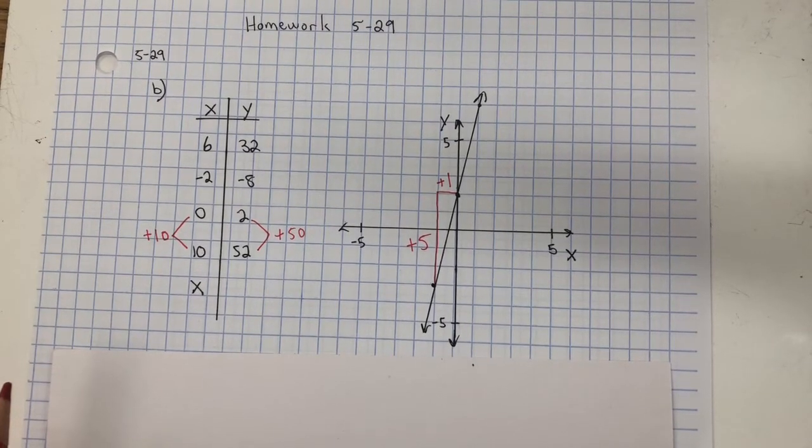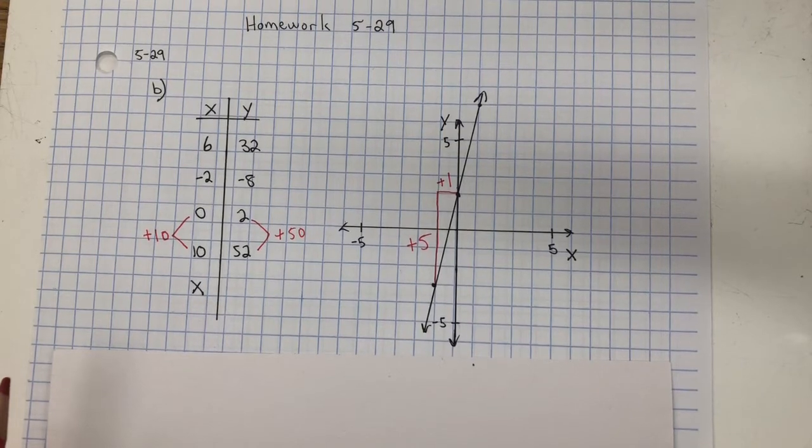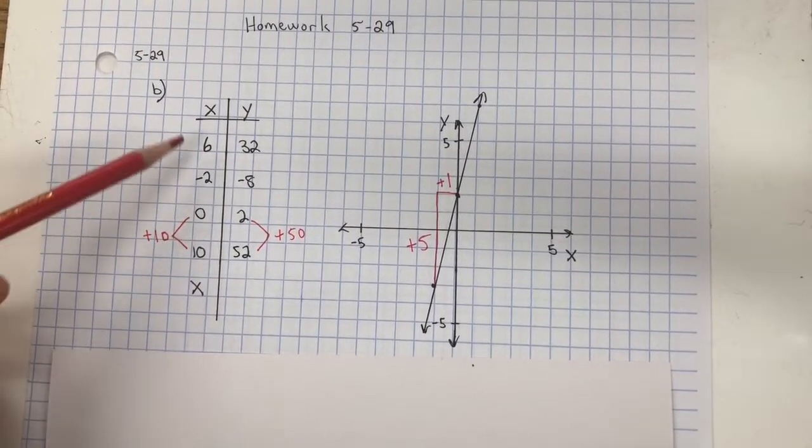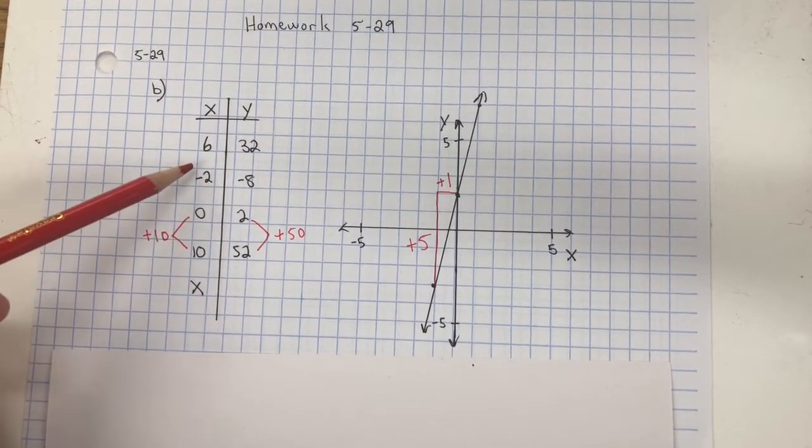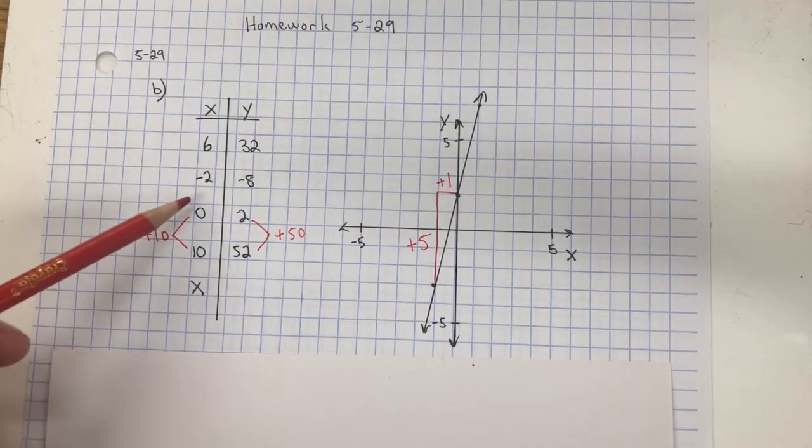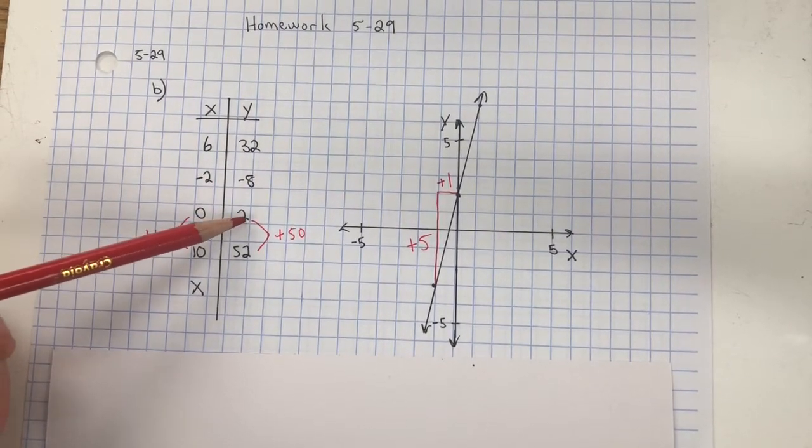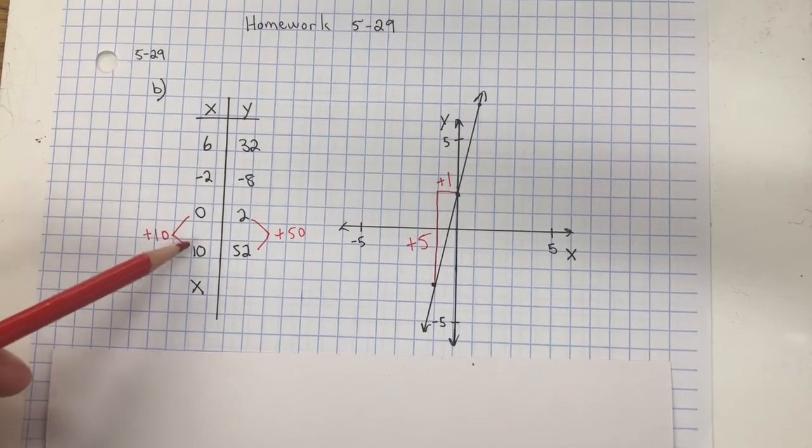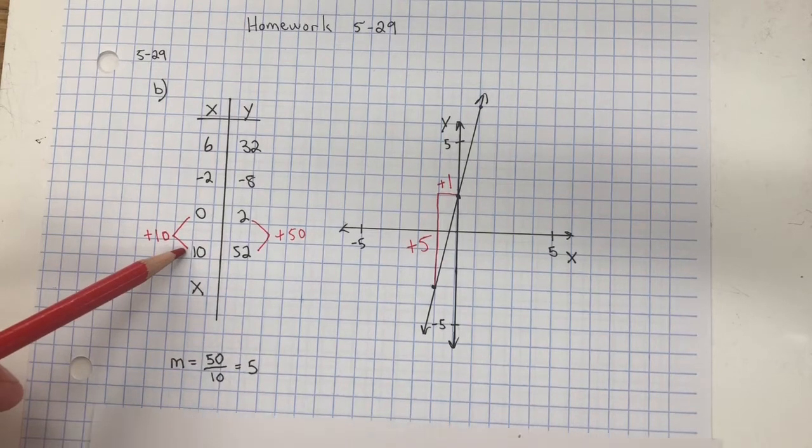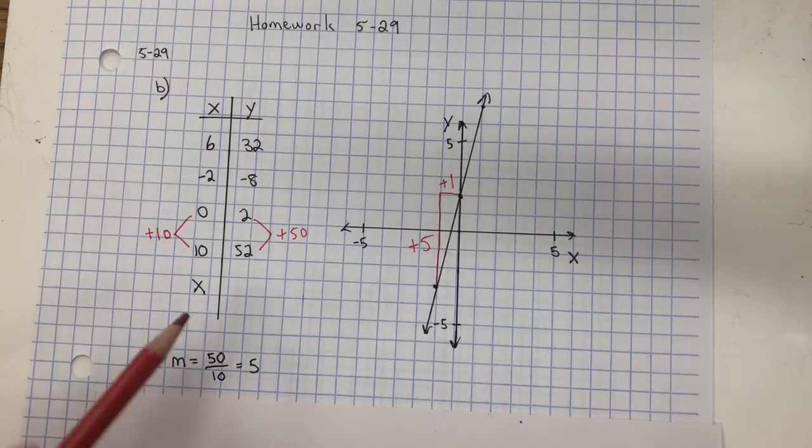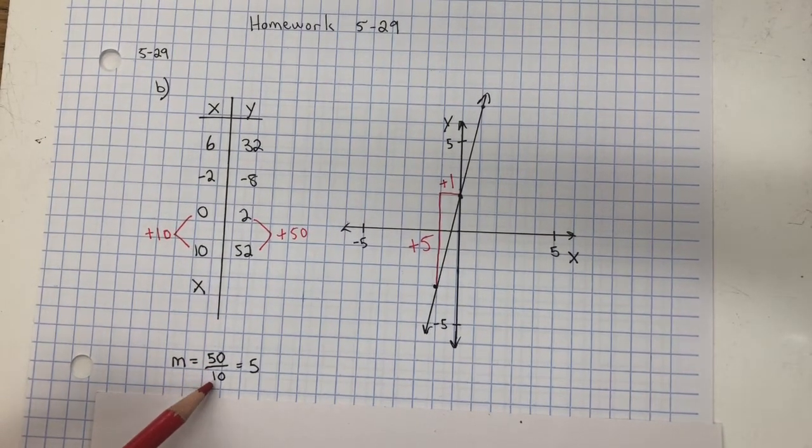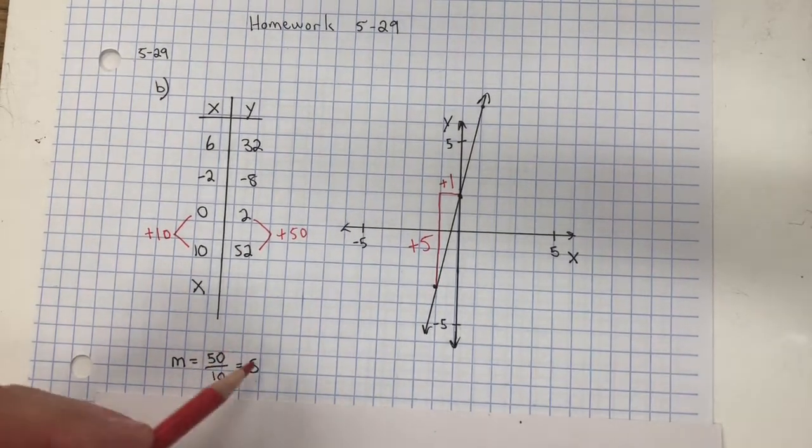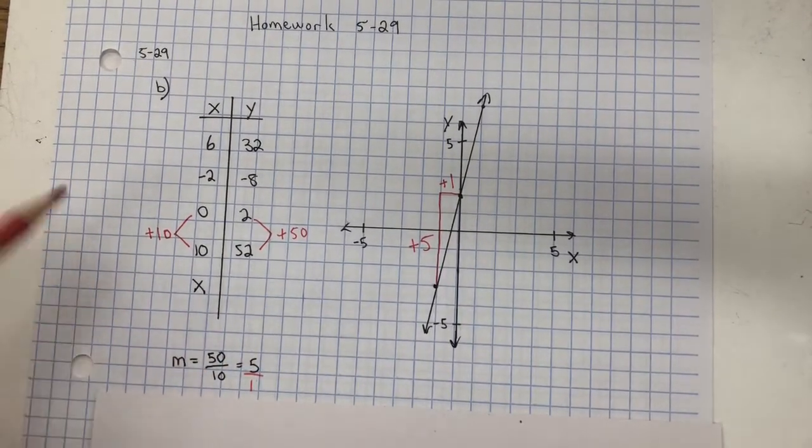For 529B, you need to write an equation or rule for the XY tables, and then graph each rule. So if you look at the table, you want to find the rate of change. And I can take any two of these ordered pairs and find the rate of change. So I just took these two, and from 2 to 52, it's going up by 50. And the X's, from 0 to 10, is going up by 10. So if you think of rate of change or slope, the Y's are going up by 50 over the X's, which is going up by 10. So the slope or rate of change is 5, or you can write it as 5 over 1.